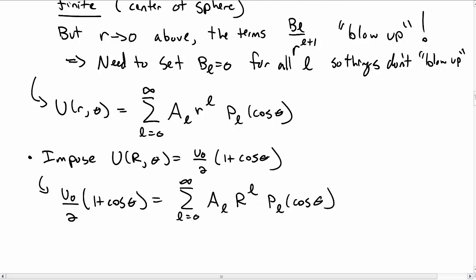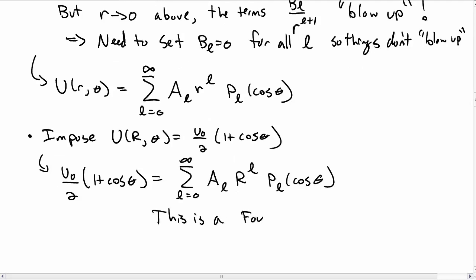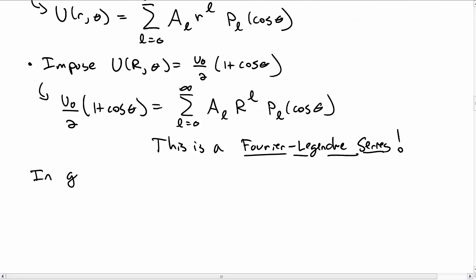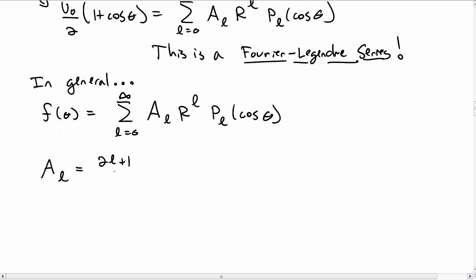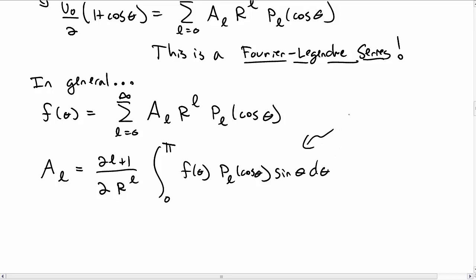R^l appears because we impose r = R at the boundary. This should look familiar — this is after all just a Fourier-Legendre series, and we can solve it in a similar way. In general, for solving a Fourier-Legendre series where some function of θ equals the sum over l of a_l times R^l times P_l(cos θ), you can always find the coefficients using the standard result: a_l equals (2l+1)/2 times 1/R^l times the integral from 0 to π of f(θ) times P_l(cos θ) times sin θ dθ. This result comes from the orthogonality of the Legendre polynomials.